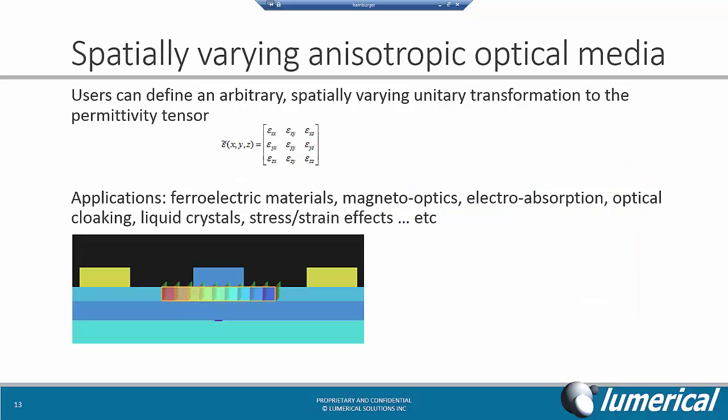Another important feature I want to mention for the optical solvers is the ability for a user to define a spatially varying anisotropic optical media. This gives the user complete freedom to define an arbitrary spatially varying unitary transformation to the permittivity tensor. It allows us to simulate applications such as ferroelectric materials, magnetic optics, electroabsorption, and many others.